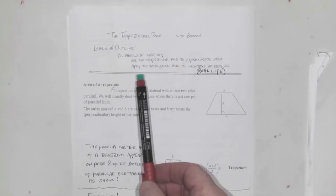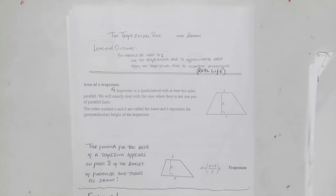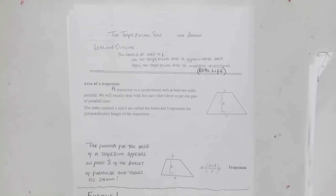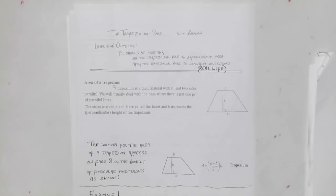We don't know what the trapezoidal rule is yet, and we'll apply it to in-context or real-life questions. First, I need you to know what a trapezium is. A trapezium is a four-sided figure with at least two sides parallel.